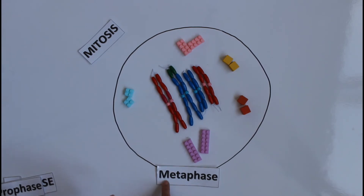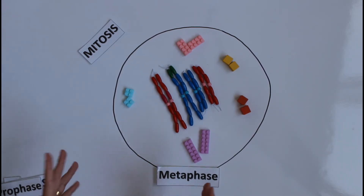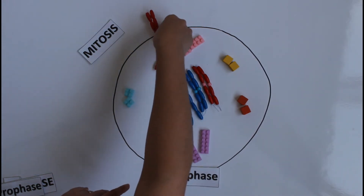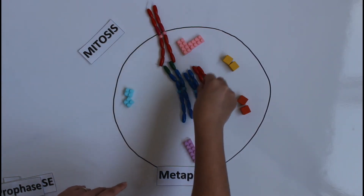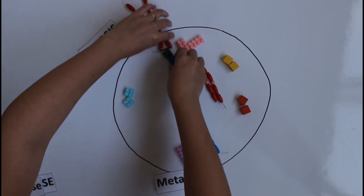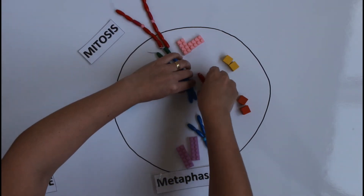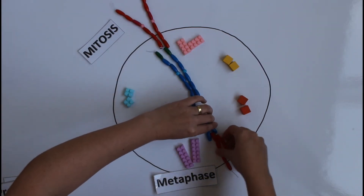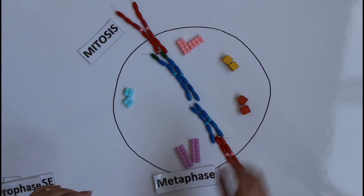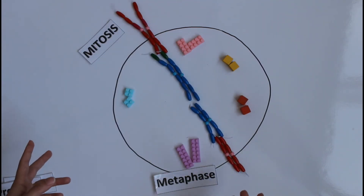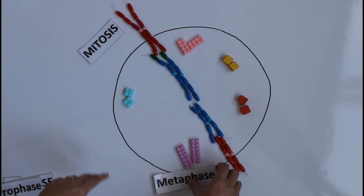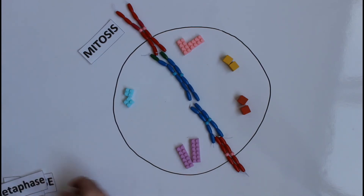After prophase comes metaphase. M stands for middle — what goes to the middle? The chromosomes. Each chromosome moves to the middle of the cell. All the chromosomes line up at the middle of the cell. That's it for metaphase.